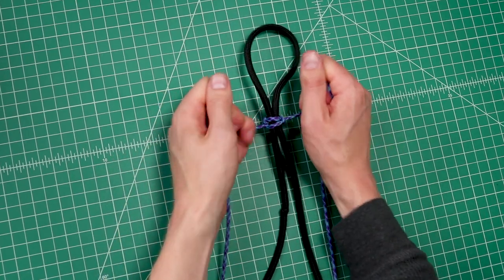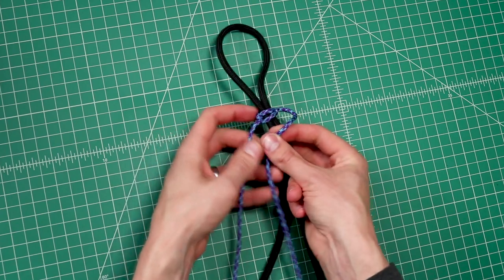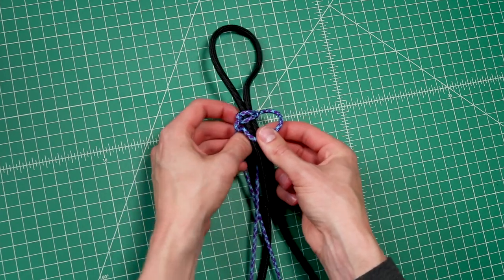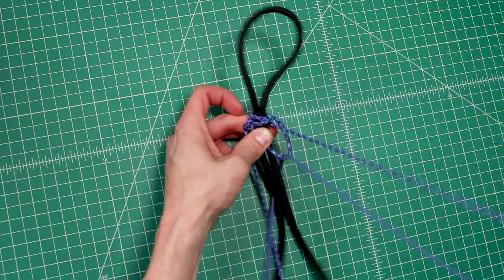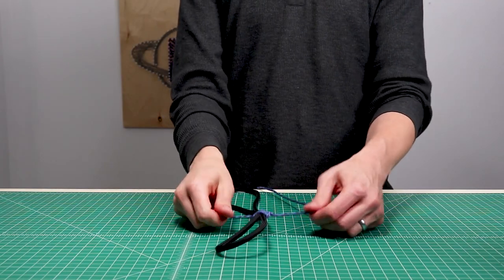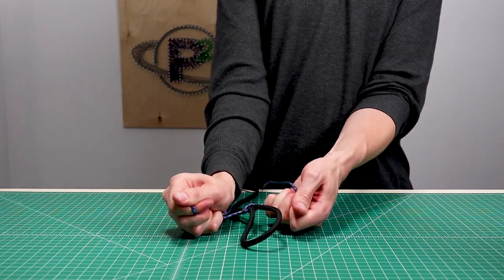I'll tie one more of those before we go any further. So right side again, left around the back, and up. And pull these first couple knots pretty good and tight.